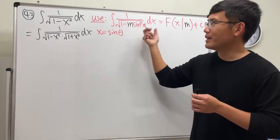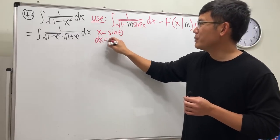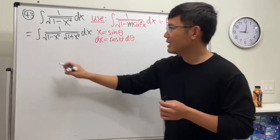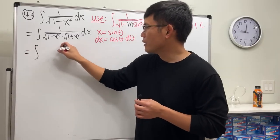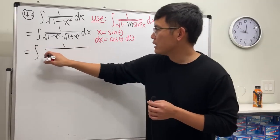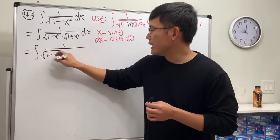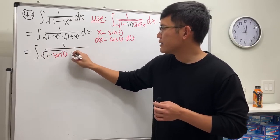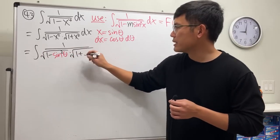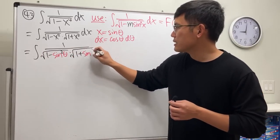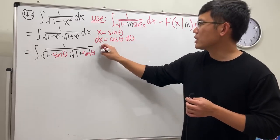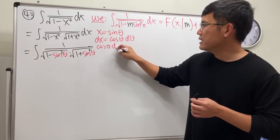Okay, and then dx will be cosine theta d theta. And see what happens, ladies and gentlemen: integral of 1 over square root of (1 minus sine squared theta) times square root of (1 plus sine squared theta). dx is cosine theta d theta.